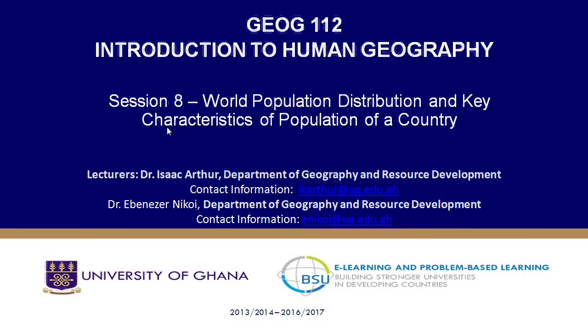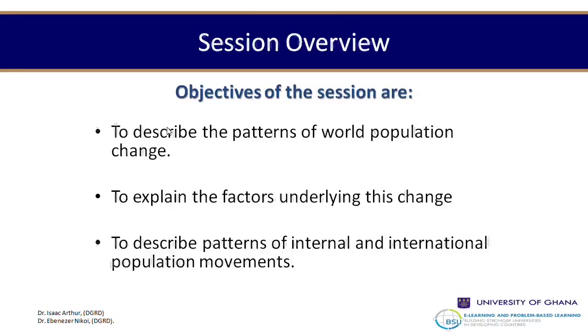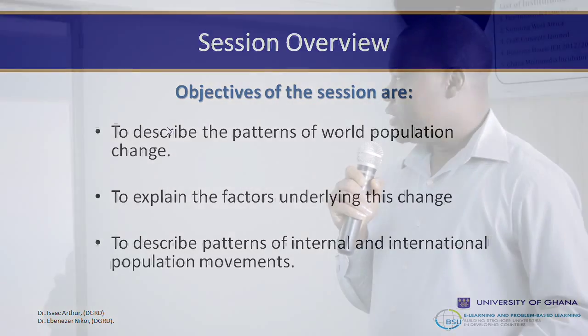Welcome to session 8 with Dr. Nikoi. This is a continuation of session 7 on population characteristics — how to measure it, the issues of over and under population, and the consequences for planning and development. Today we are looking at world population distribution and key characteristics of population. Our main objectives are to describe the patterns of world population change, explain the factors underlying this change, and describe the patterns of international and internal movements of population.